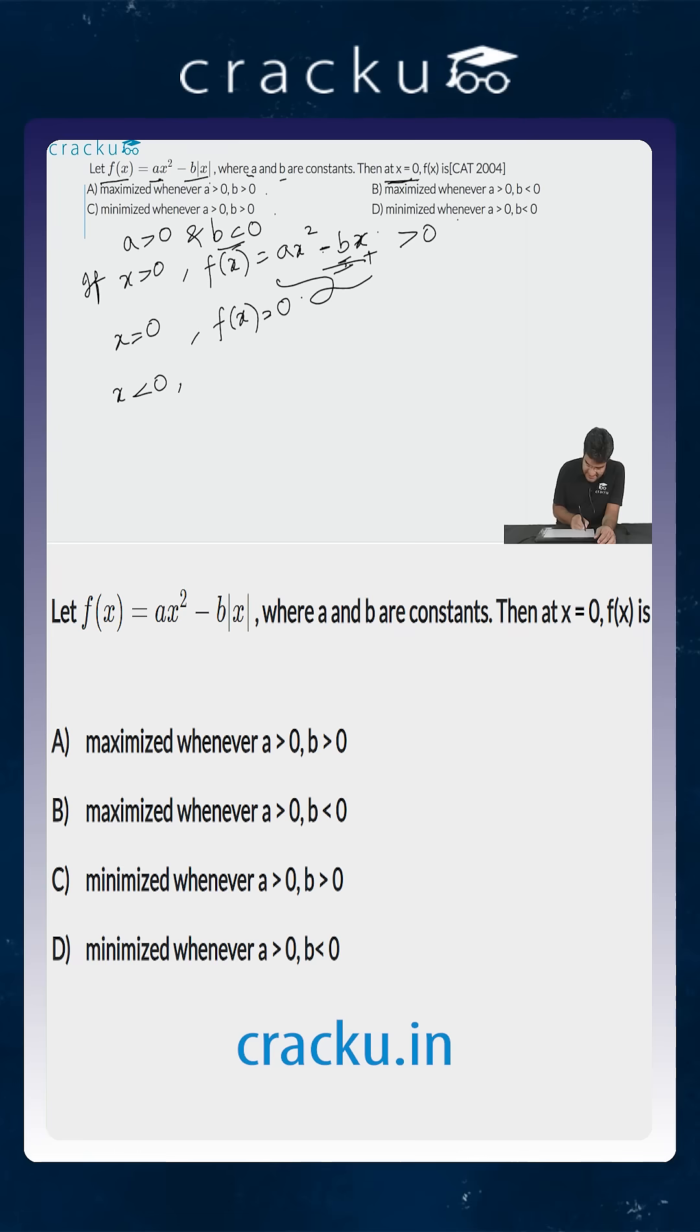If x is less than 0, f(x) will become ax² plus bx. That is because modulus of x will be minus x. Now if you look at it, b is negative and x is negative. So bx will be positive and ax² is also positive. So this will also be greater than 0.